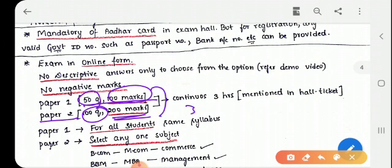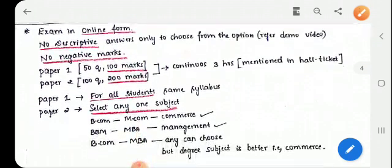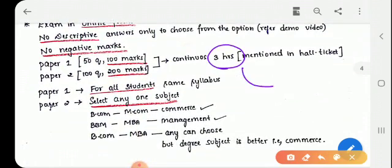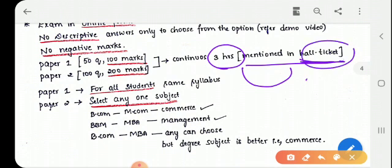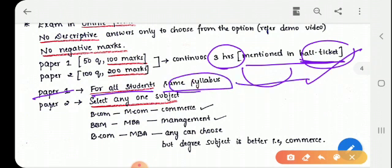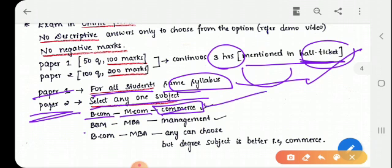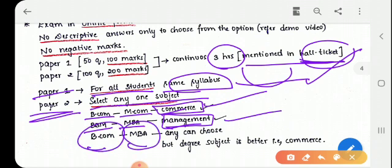No negative marks. This is good news for any NTA aspirants, you have no negative marks for your wrong answer. So it is okay to attend all the questions even though if you don't know the answer. With a guess you can attempt all the questions. Paper 1 has 50 questions, 100 marks. Paper 2 has 100 questions with 200 marks. So basically you have 150 questions for 300 marks. Three hours will be given and the timings of these three hours will be mentioned in your hall ticket itself. Date and time and also place, everything will be mentioned in your hall ticket. You should be checking time to time to download the hall ticket and admit card.